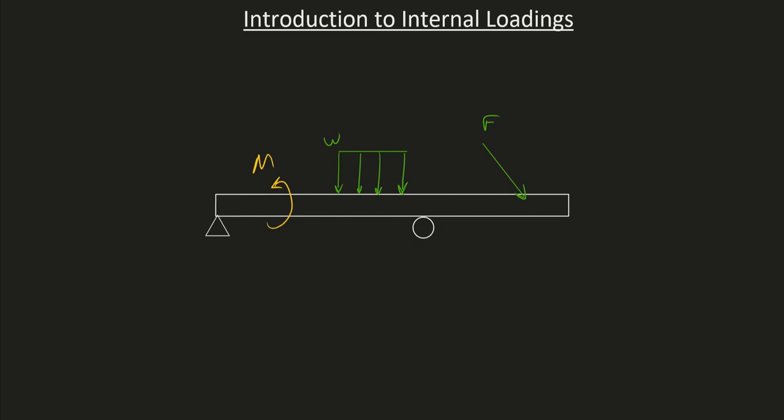So let's say that we have this beam and it's loaded with a moment, a distributed loading and some force over there on the right. Alright, let's say that we did this. For my free body diagram, let's say that I chose to do it on this right here. And that's kind of weird because I kind of section off that right part.